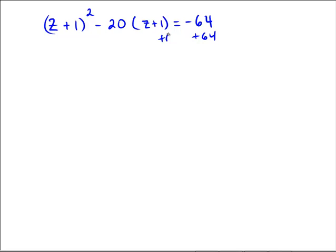So first, right off the bat, I'm definitely going to move that 64 over to the left-hand side so it looks quadratic. So z plus 1 squared minus 20 times z plus 1 plus 64 equals 0.